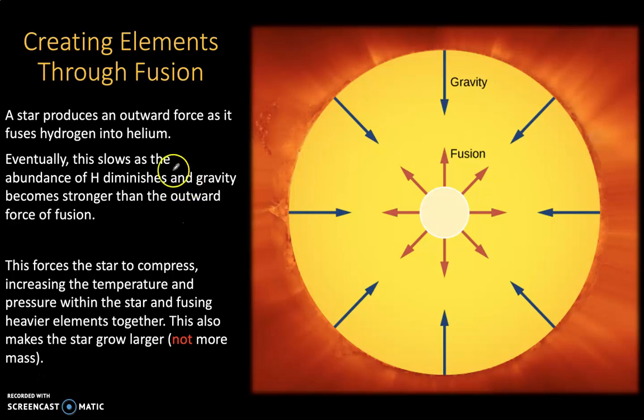Creating elements through fusion. A star produces an outward force as it fuses hydrogen into helium. So within its core here, the pressure and temperature is so great that the star is able to smash protons together and undergo nuclear fusion. It smashes hydrogen atoms together, so singular protons, creating helium. And that nuclear reaction produces an outward force that radiates outward inside of the star. And that counteracts the force of gravity that's trying to crush the star inwards. And that balance holds the star up and allows the star to continue burning hydrogen.